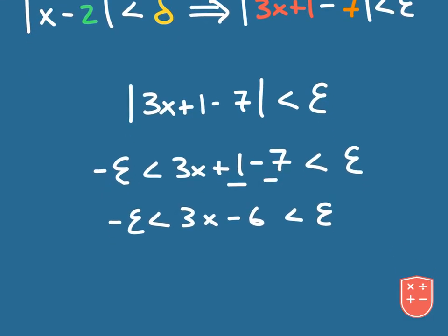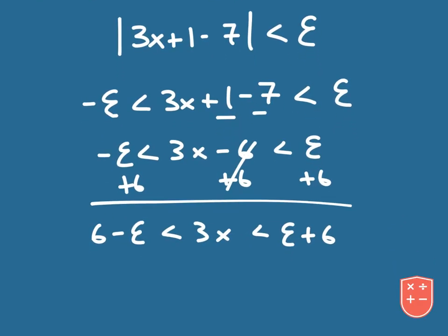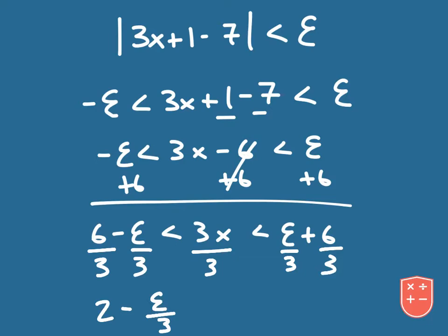Then what we want to do is solve this for x. I'm going to add 6 to all three sides and we get: 6 minus epsilon is less than 3x is less than epsilon plus 6. The next step is to divide everything by 3, and at this point we get 2 minus epsilon over 3 is less than x, which is less than epsilon over 3 plus 2.